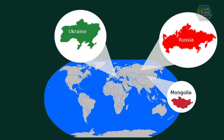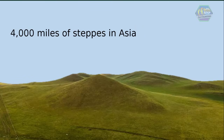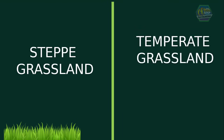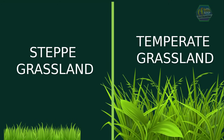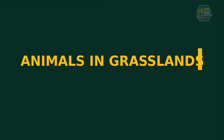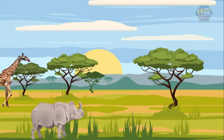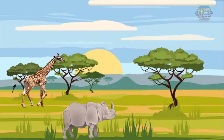Steppes are grasslands found in Russia, Mongolia, and Ukraine. There are over 4,000 miles of steppes in Asia. The grasses that grow there are shorter than those found in temperate and tropical grasslands. There are no trees found in steppes except along the banks of rivers and streams.